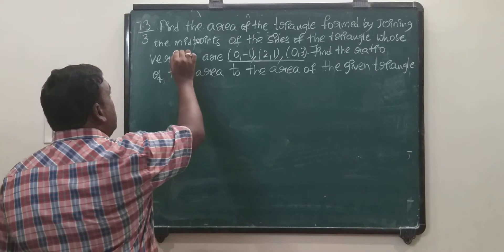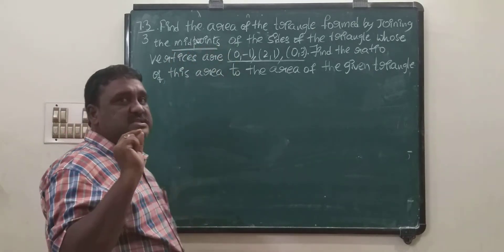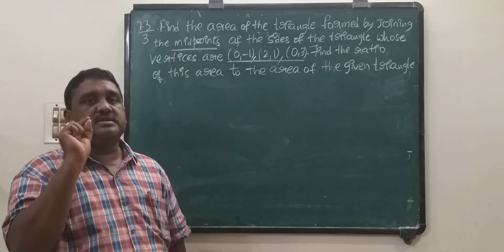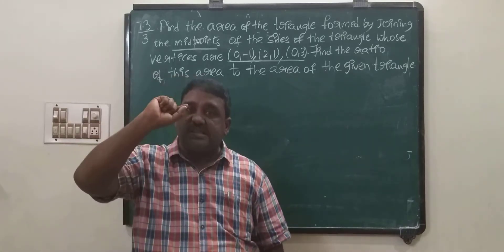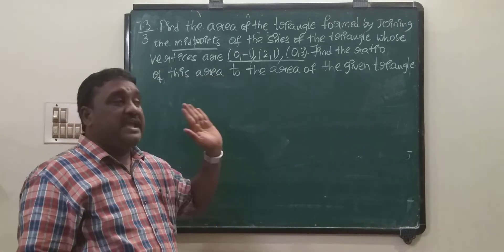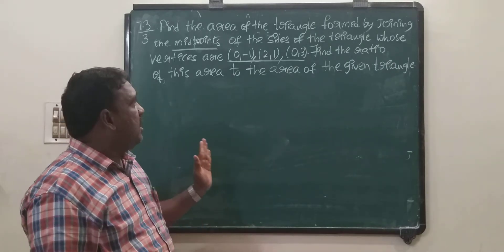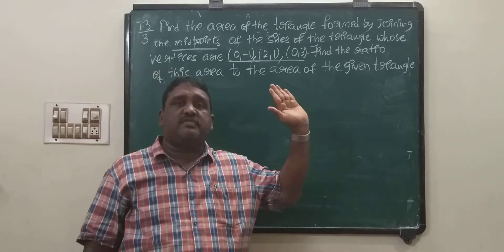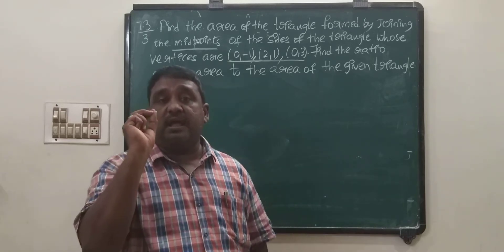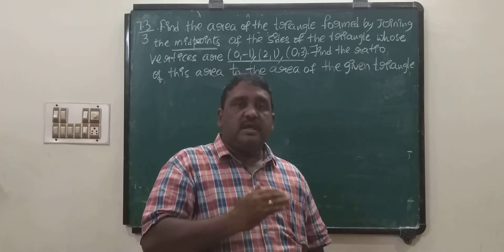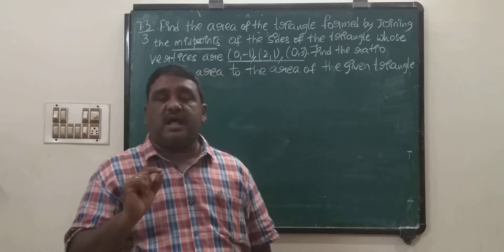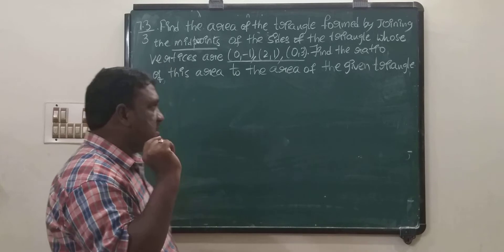Along with the vertices, midpoints are there. So what is there in the problem? Three vertices and three midpoints of the sides of the triangle. What we need to find out is the ratio between the area of the triangle formed with midpoints and the area of the triangle formed with vertices.